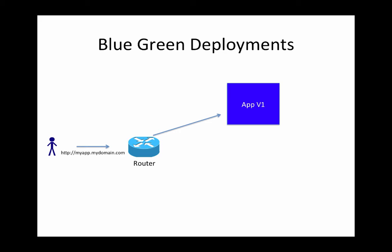Let's take an example of an application that has version one running — we'll call this the blue version. This blue version is front-ended by a router. An end user or client issues a call to your application by typing in a URL, and this router translates that URL to whatever the application is running, and you get your application served.